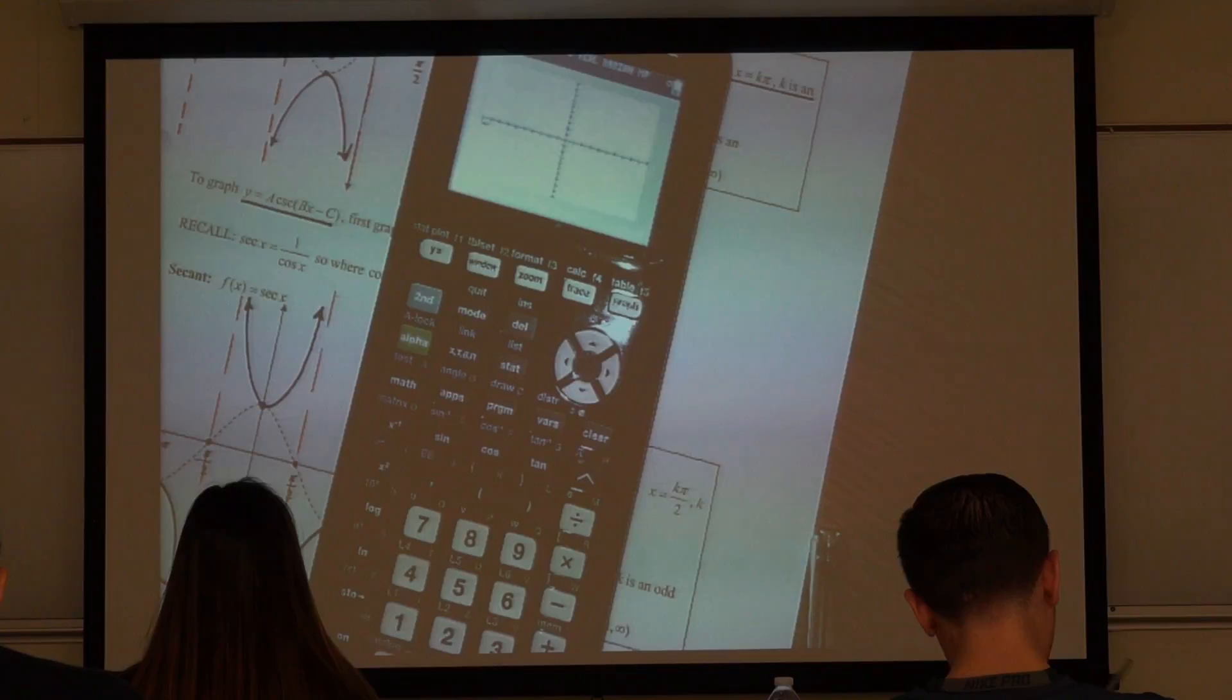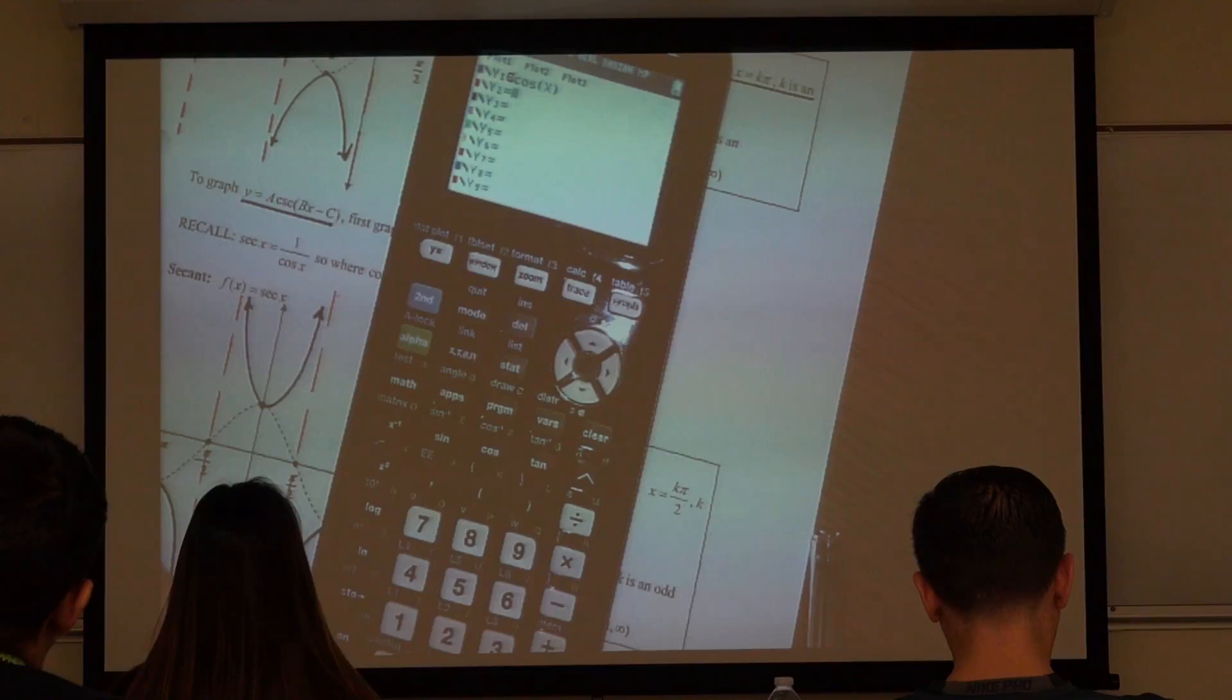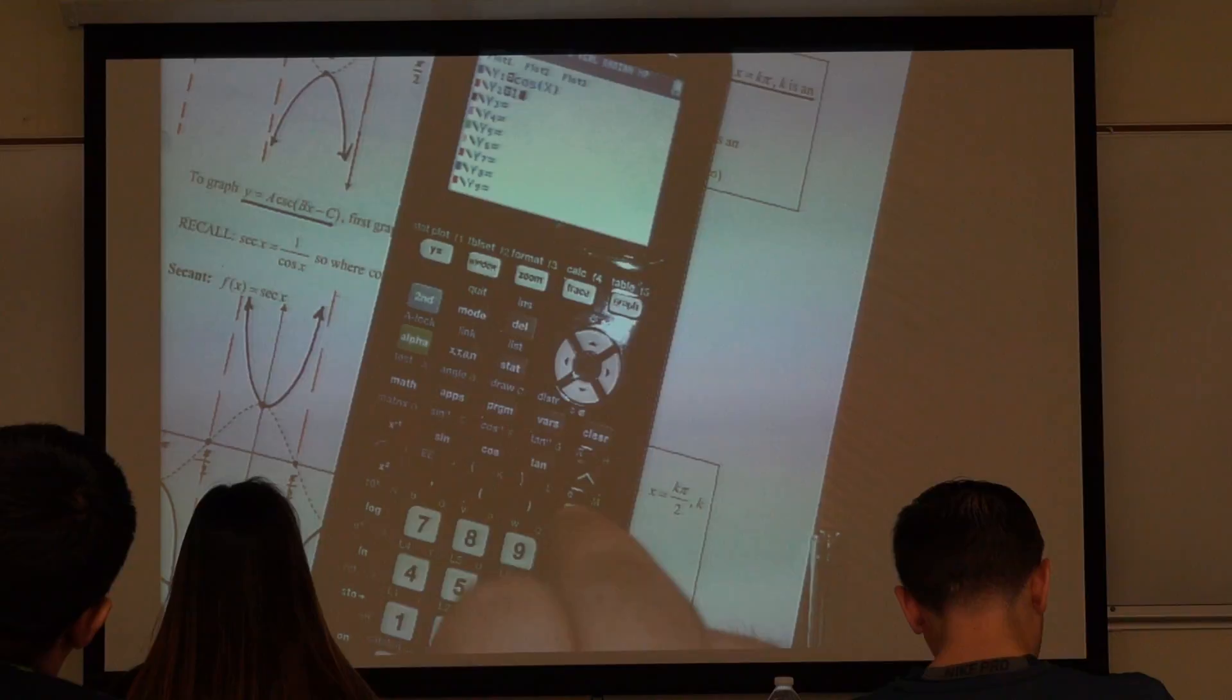I just cosine, right? Okay, I want to do cosecant, but the function itself doesn't have cosecant, so you just do 1 over what? Cosine.